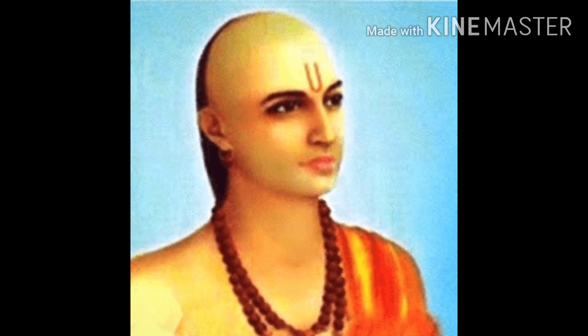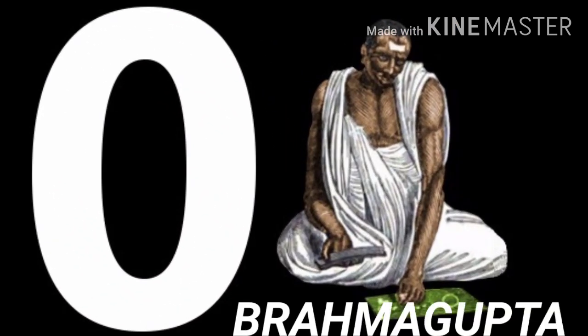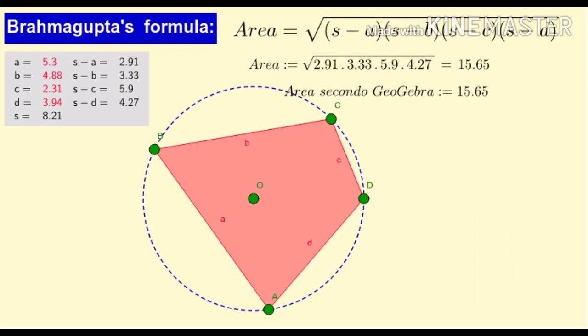Brahma Gupta, born between 598 to 670 CE. He is known for zero and the modern number system, the Brahma Gupta theorem, Brahma Gupta identity, Brahma Gupta problem, Brahma Gupta–Fibonacci identity, and the Brahma Gupta interpolation formula.